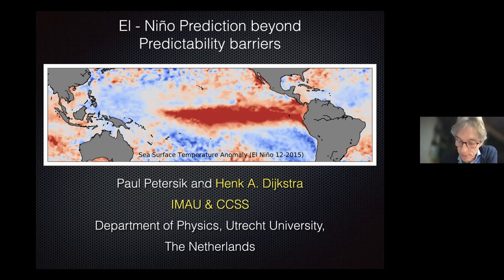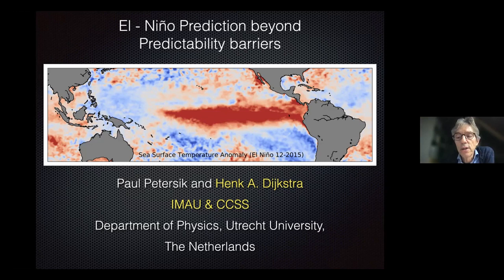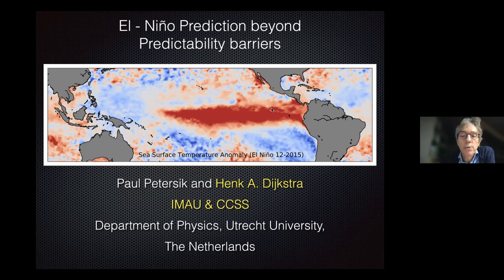For those in the audience who are more computer scientists, I'm going to explain a bit about El Niño because it motivates further work we do with machine learning. Then I will show results using machine learning for ENSO prediction and try to give an overview of what has been done and what is currently going on. El Niño is quite an anomaly in sea surface temperature in the tropical Pacific, mainly in the eastern part.